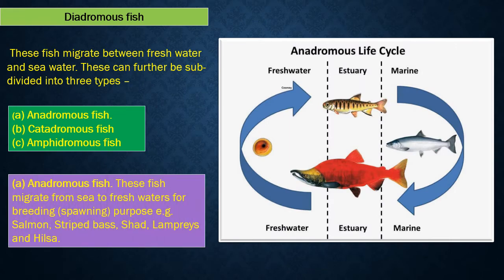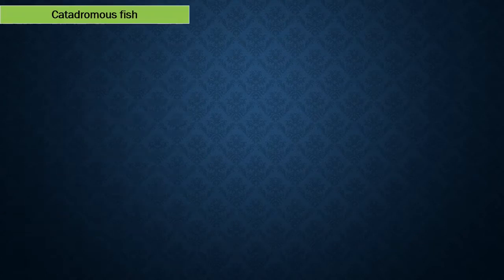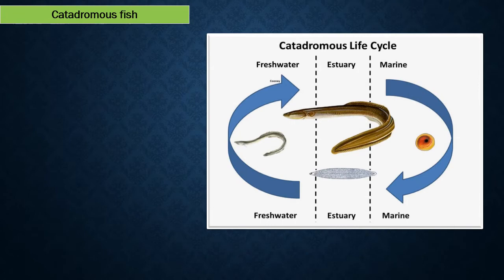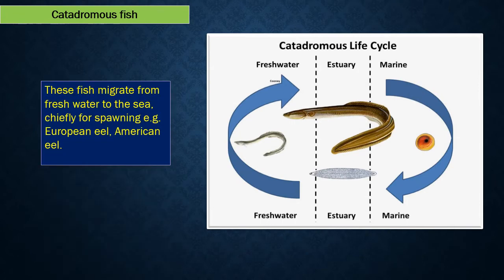Anadromous fish migrate from sea to freshwaters for breeding. For example, salmon, striped bass, shad, lampreys, and hilsa. Catadromous fish migrate from freshwater to the sea, chiefly for spawning. For example, European eel and American eel.